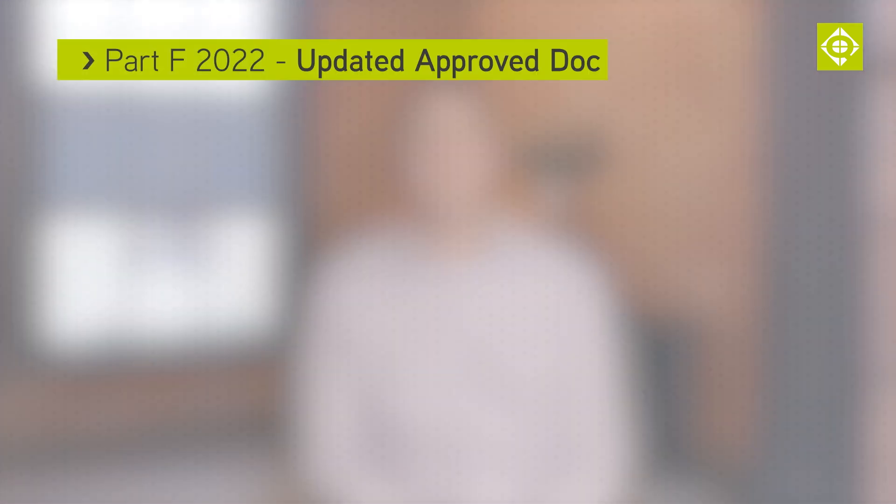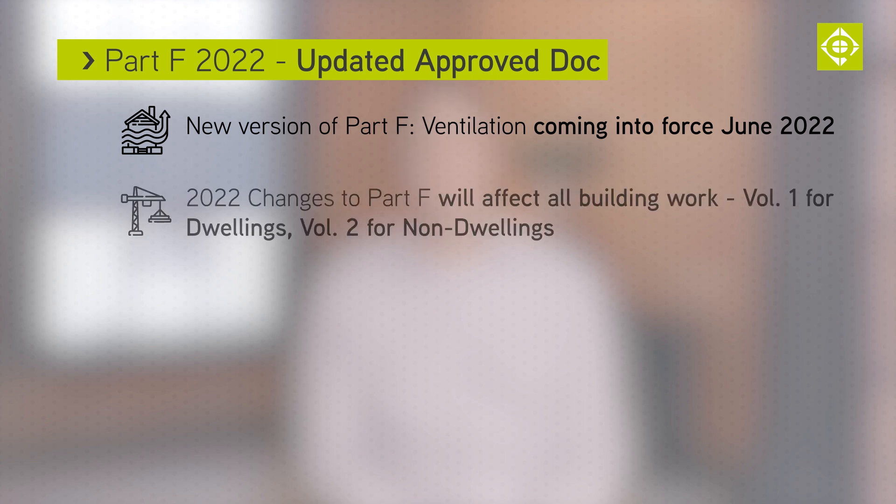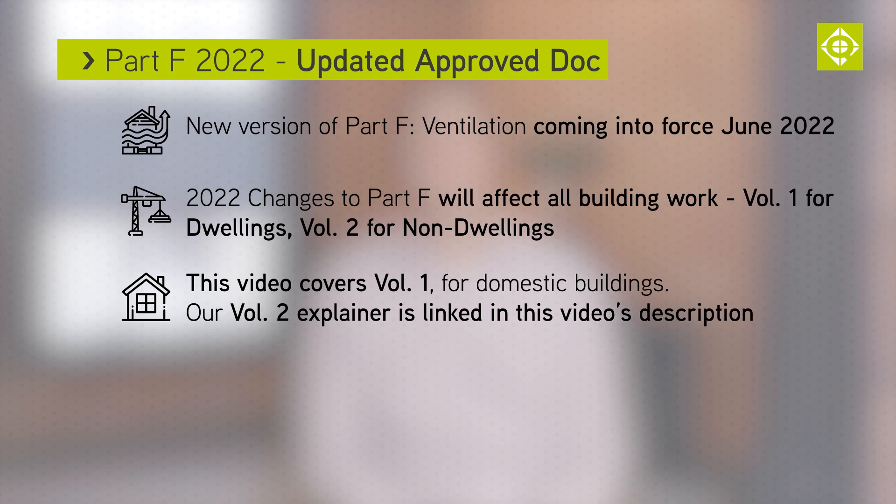This year a new version of Approved Document F, related to ventilation, is coming into force. The 2022 changes to Part F will cover all building work. Volume 1 is for dwellings and Volume 2 is for buildings other than dwellings. In this video we'll look at Volume 1 for domestic buildings. Follow the link in the description to watch our video about Volume 2.